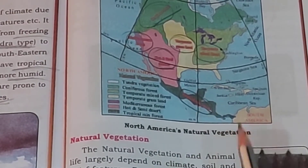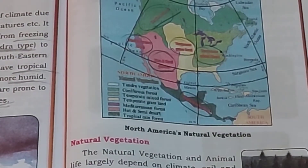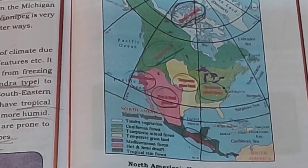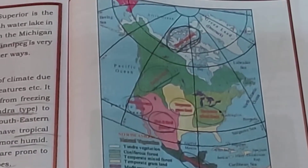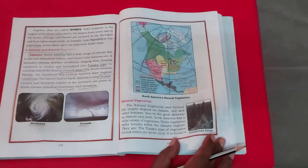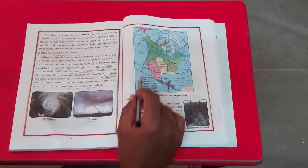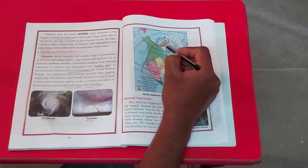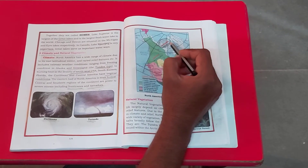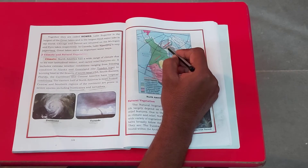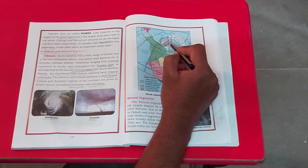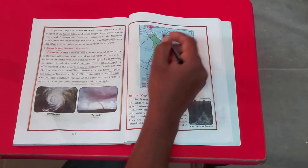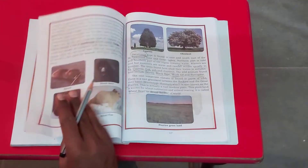So natural vegetation has been divided into 7 parts, and varieties of vegetation are found in the entire continent. If we especially take the tundra type of climate: most of it is covered by snow — it is frozen. Since it is frozen, much vegetation is not found here, only tundra vegetation.